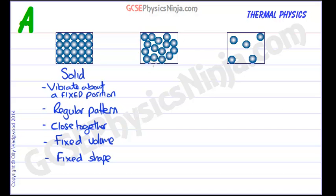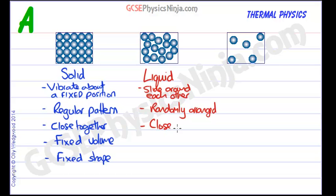Going on to the second state of matter - this is a liquid. Liquids slide around each other; the particles slide around each other randomly. They are randomly arranged and are actually still very close together.